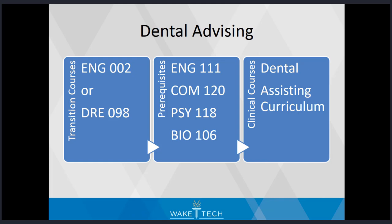Once accepted, pre-dental assisting students are advised based upon a life-to-school balance framework. If a student is required to take college transition courses, those courses are recommended first. Then students are advised to take the following prerequisites: English 111, Com 120, Psychology 118, and Bio 106.